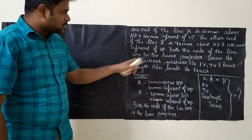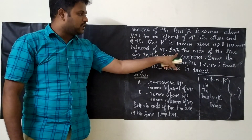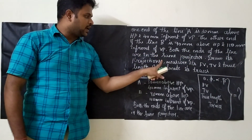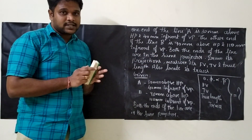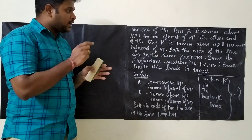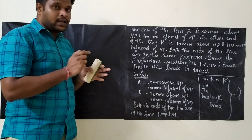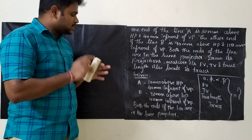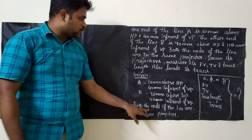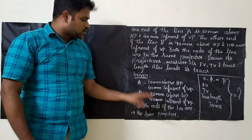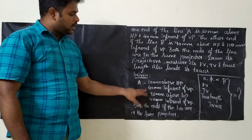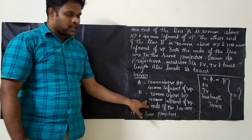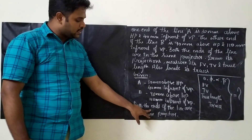Next, they have clearly given that both the ends of the line are lying in the same projector. It means that A', B', A, and B will all be lying on the same line. So totally we are having 5 data points — 4 are directly given and 1 end is derived. Using these 5 we can draw the diagram.